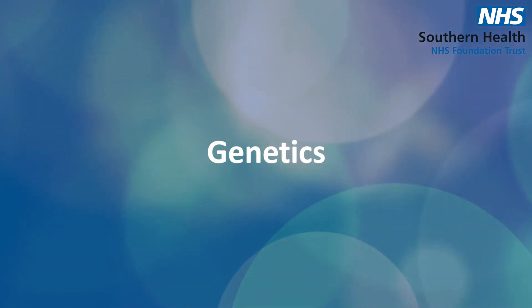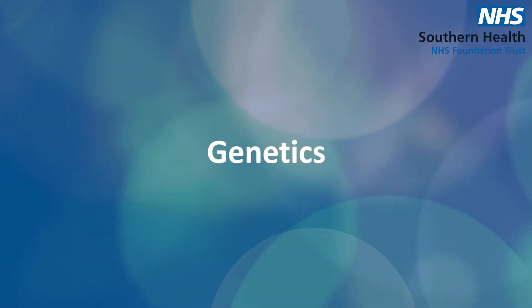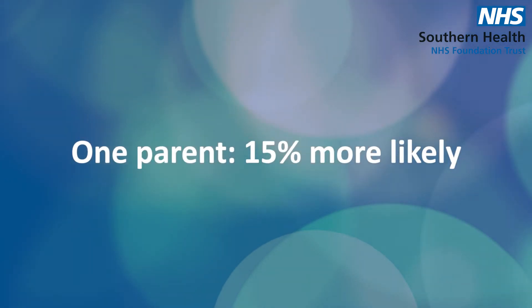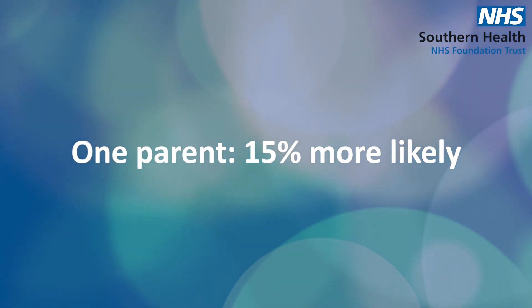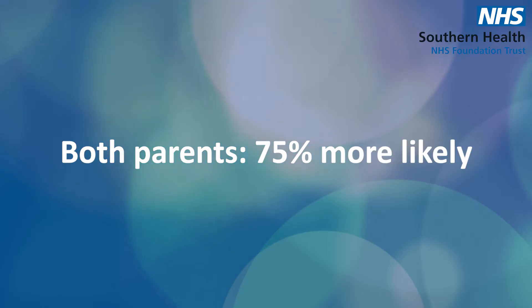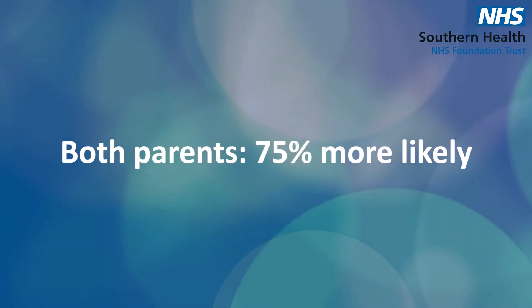There's also a genetic element, so if you have a parent with type 2 diabetes it does make you 15% more likely to develop type 2 yourself, and if you have two parents with diabetes that makes you 75% more likely to develop diabetes. It's not necessarily a given though, so don't worry if both your parents have diabetes, because there are things you can do to help stave off the development of the disease.